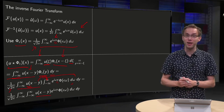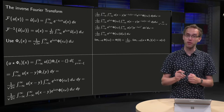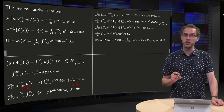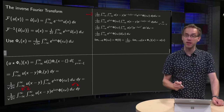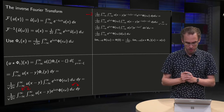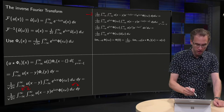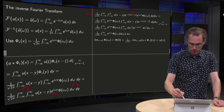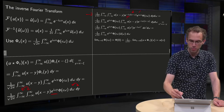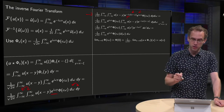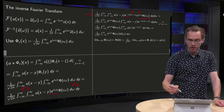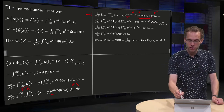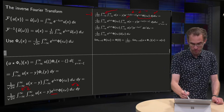Now we have a large integral. First, we apply Fubini and interchange the order of integration. Furthermore, we have e^(iωy), and we add e^(−iωx) · e^(+iωx) — their product equals 1. Now the factor e^(+iωx) only depends on ω, not on y, so it is constant with respect to the y-integral and can be taken in front of it.